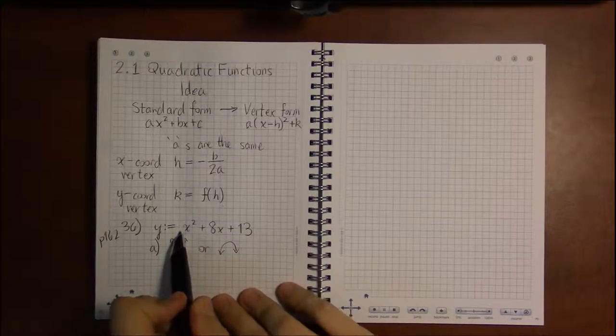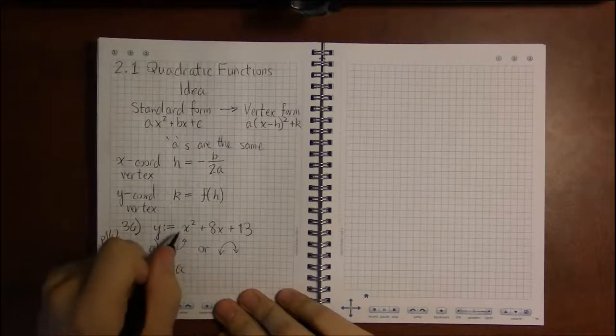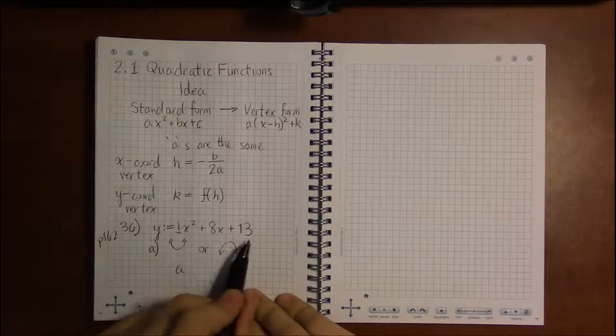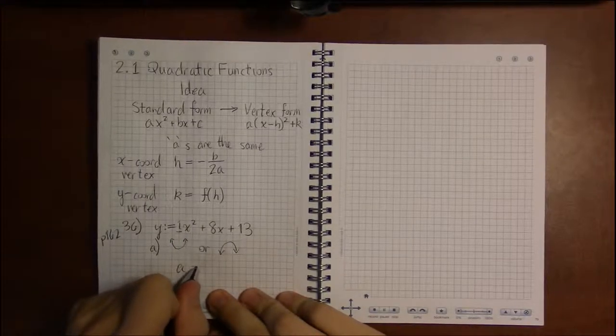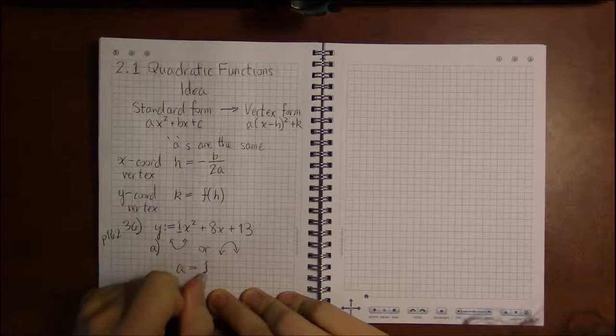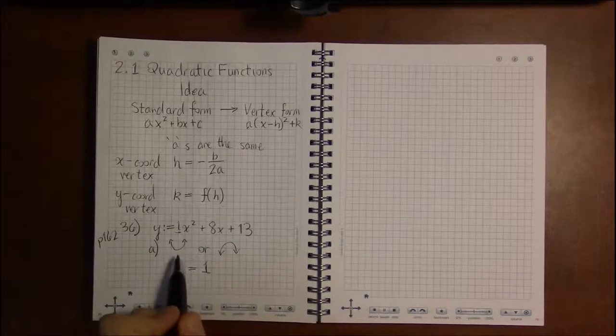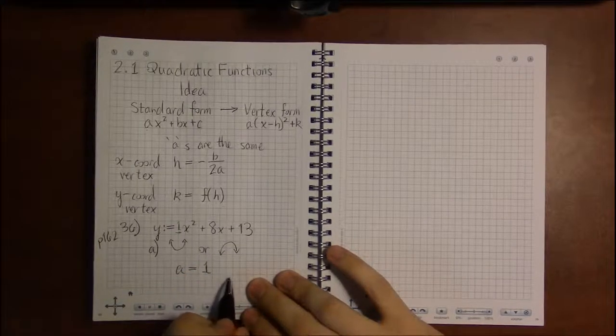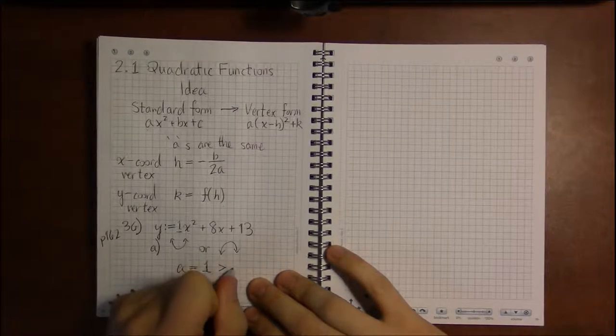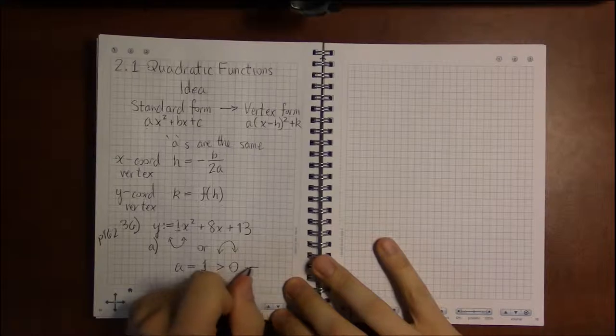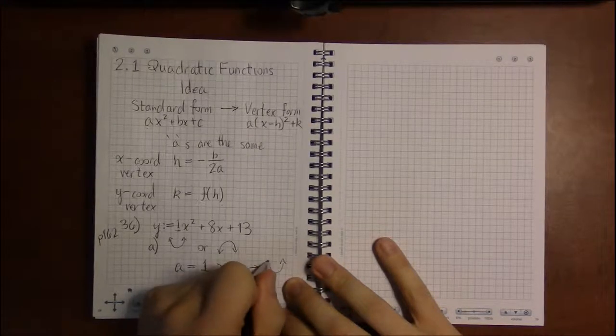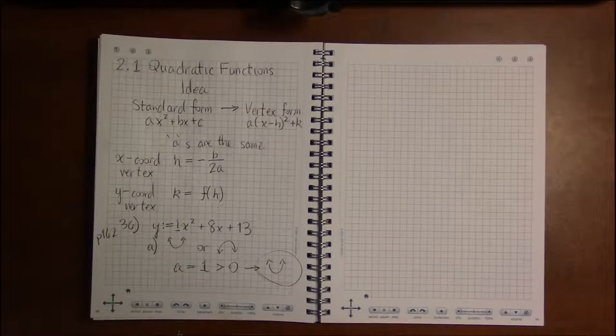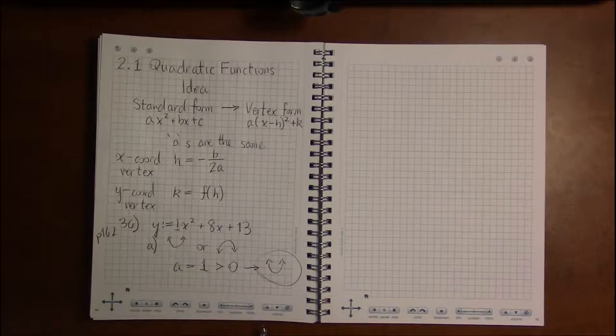And in this case, we don't have a number multiplying x squared. So if you don't have a number, you can always fill in the blank with 1. Because 1 times x squared is just x squared. We haven't changed the formula at all. So if you don't see it, a can always be 1. Now the thing that determined whether it opened up or opened down was whether or not a was positive or a is negative. And in this case, a is positive. It's greater than 0. So that means the graph opens upwards. So that's going to be the basic shape of our graph. And that's the answer to part A.